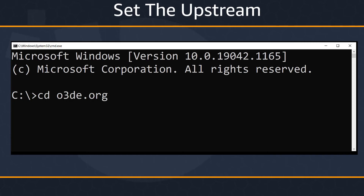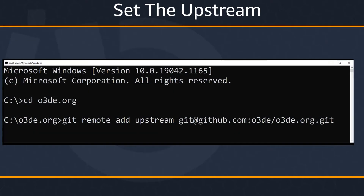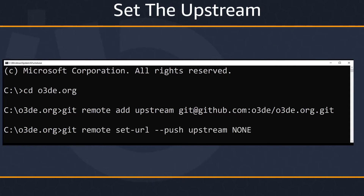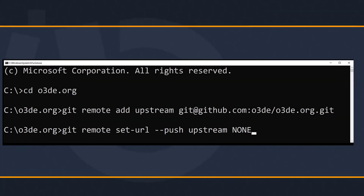A quick note about pulling new changes into our fork from the main branch: contributors don't actually have direct push access, so changes are submitted through pull requests. We'll need to set up an upstream and sync our clone. First, let's change directories into our newly cloned repo. Now we'll set the upstream for your clone to the main O3DE docs repo with the following command. We'll also need to disallow pushing to the main O3DE docs repo from your clone, which we'll do with the following command.